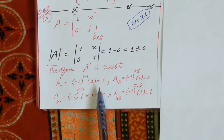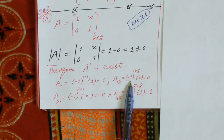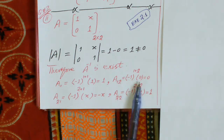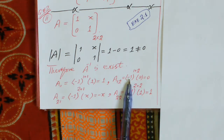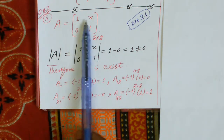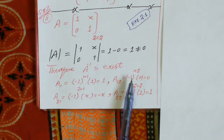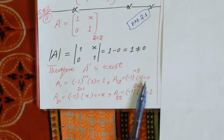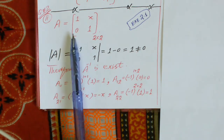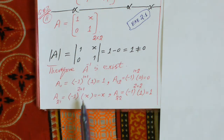Next, calculate the cofactor of the first row and second column, which is obtained by multiplying (-1) raised to the power 1+2 by the element obtained after deleting the first row and second column. We get 0, and multiplying gives 0. The cofactor of the second row and first column is (-1) raised to the power 2+1 multiplied by the corresponding minor.